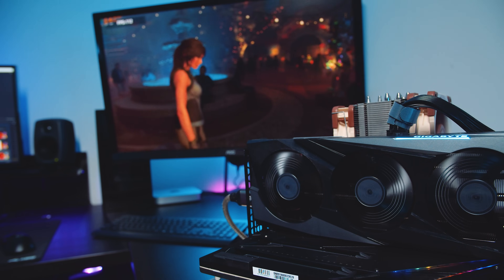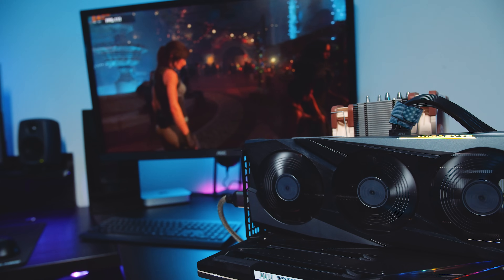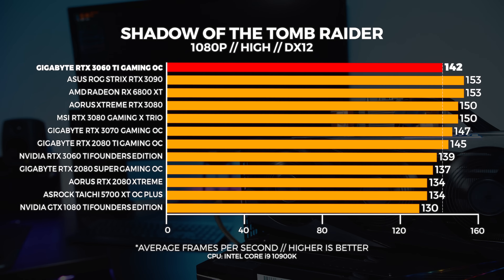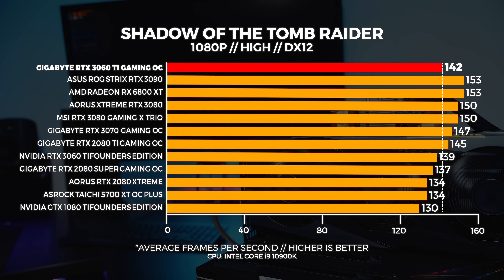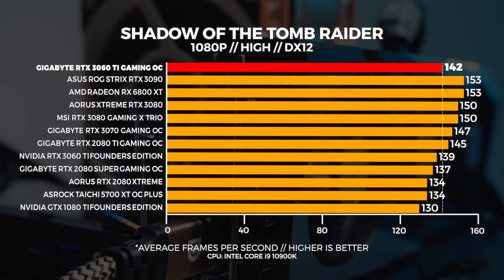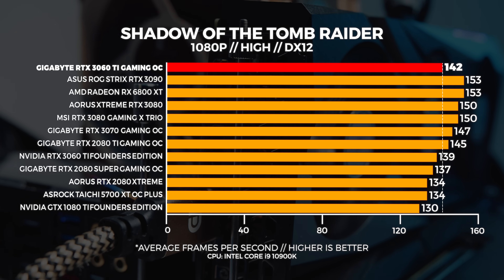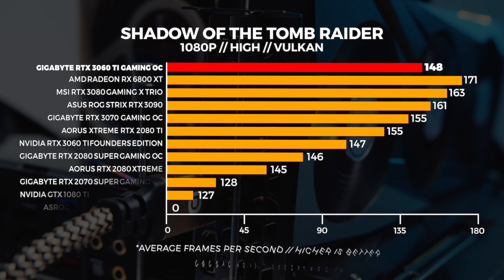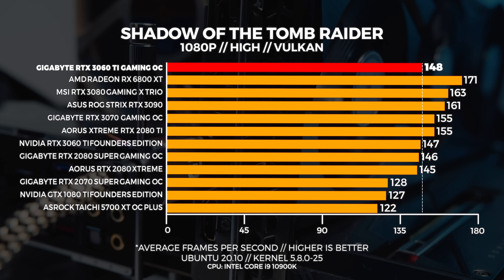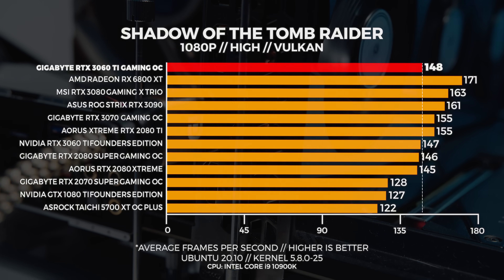Let's kick this off with Shadow of the Tomb Raider. You can use the pause button at any time to look at the graphs for longer. The first thing you're probably noticing, even with the 1080p benchmark, is that the 3060 Ti Gaming OC is slightly faster than the 2080 Super and the Founders Edition 3060 Ti. This isn't the trend for the rest of the results though — it's a real mixed bag between the Gaming OC and the Founders Edition. When comparing Windows and Linux, we're seeing Linux performance be slightly better than Windows with Vulkan vs DX12, and this is basically always the case.